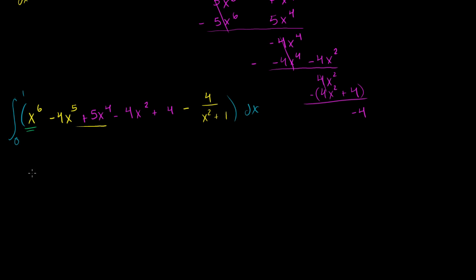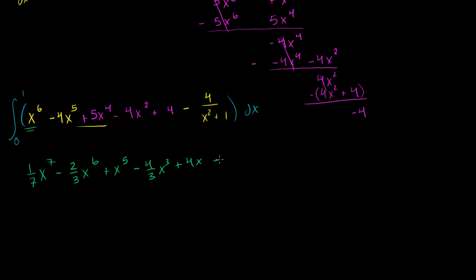Taking the antiderivative term by term: antiderivative of x⁶ is (1/7)x⁷; of −4x⁵ is −(2/3)x⁶; of 5x⁴ is x⁵; of −4x³ is −(4/3)x³; of 4x is 4x; and of −4/(x²+1) is −4·arctan(x).